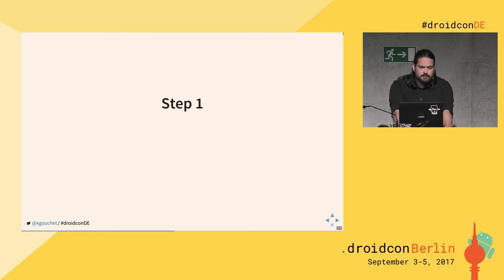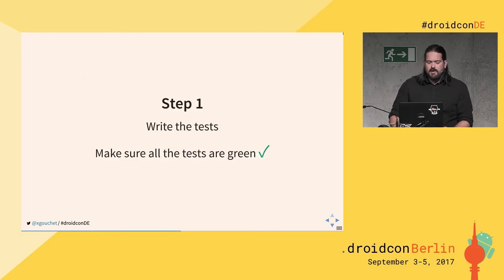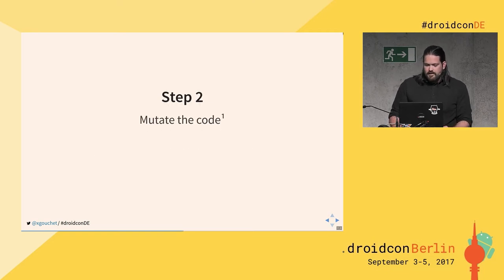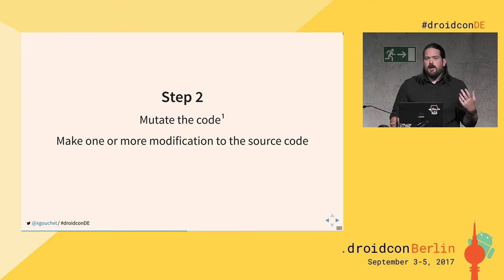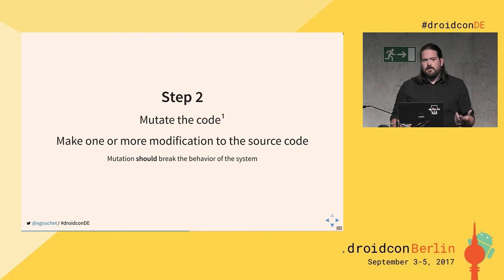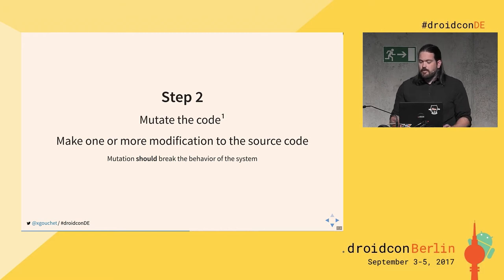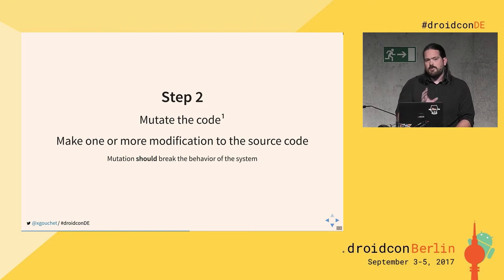Step one: write the tests and make sure they're all green. Step two: mutate the code — that is, make one or more modifications to the source code. Hopefully, a mutation of your source code should change the behavior of your code, and if the behavior changes, the tests should fail. You mutate your production code, not the test code — you mutate the source code of your app.